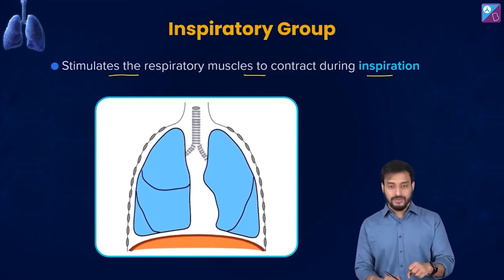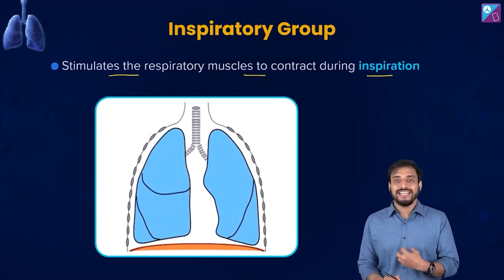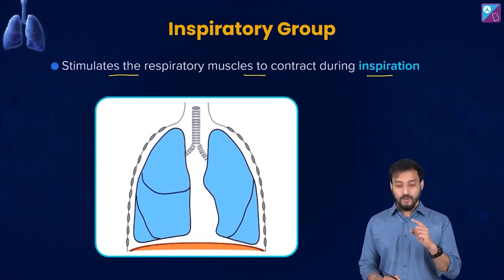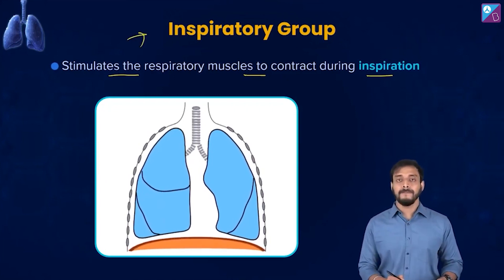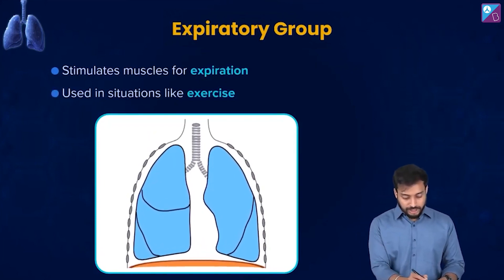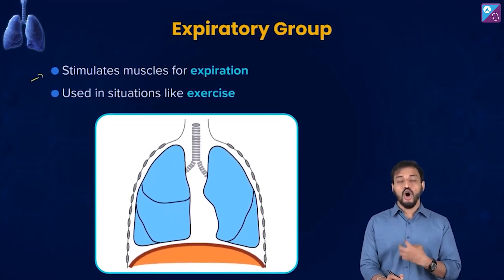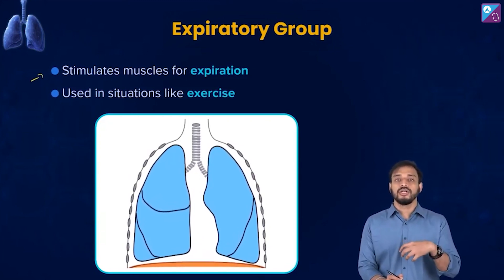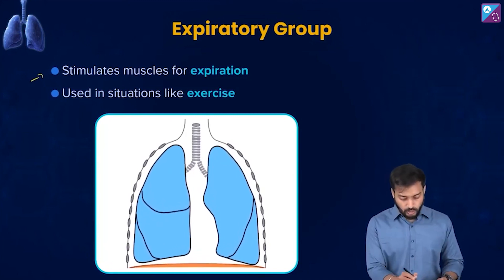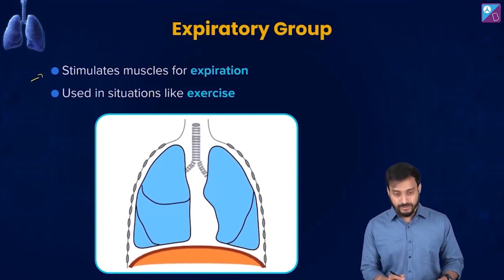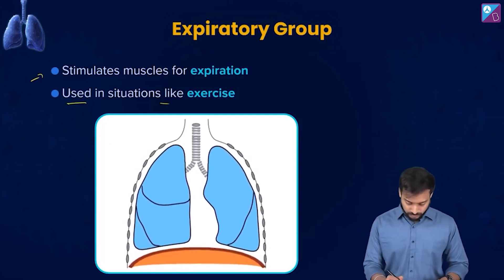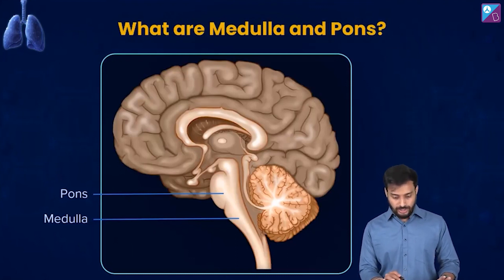The inspiratory group signals the muscles to contract so that inspiration can happen. The expiratory group, the reverse, stimulates muscles for expiration — all the changes required for the muscles to help in the expiration process, i.e., breathing out. The expiratory group is particularly used in situations like exercise.